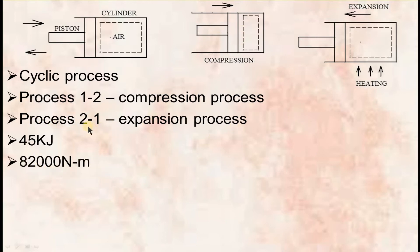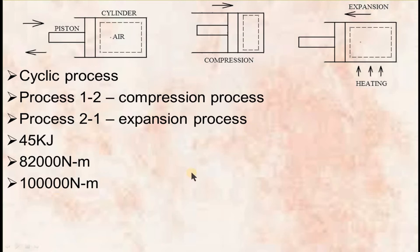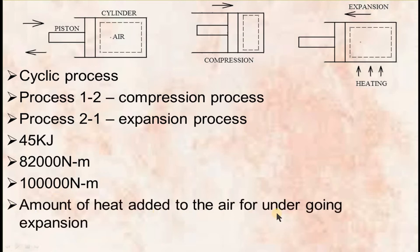Now we will analyze process 2 to 1, that is the expansion process. At the end of compression process, the piston cylinder will be heated, due to which the air present inside the cylinder will also get heated up. Therefore, the molecules present inside the air will start moving rapidly, due to which the air will get expanded automatically. Thereby, the piston will be moved towards the left. The amount of work done by the air to move the piston towards the left is 1 lakh Nm. In this question, we have to find the amount of heat added to the air for undergoing expansion.